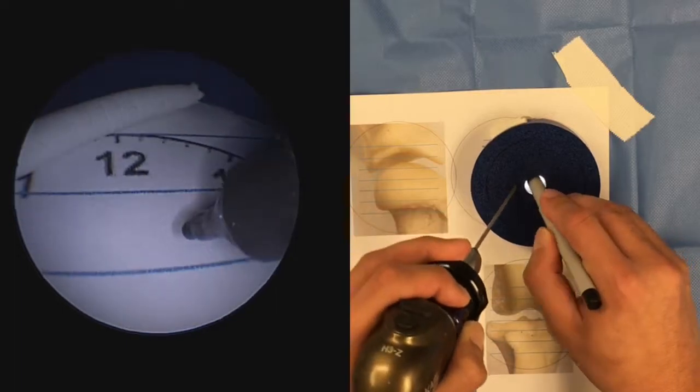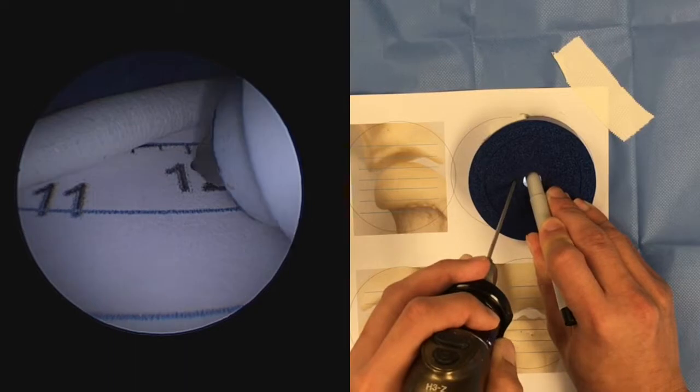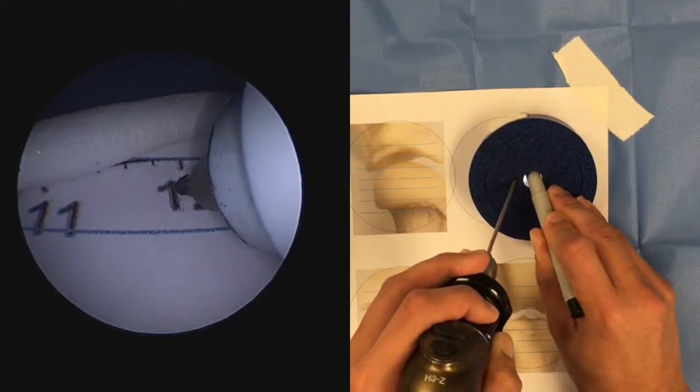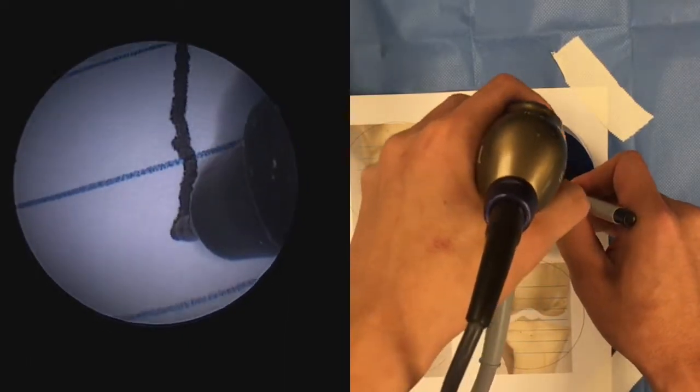In this case I've got the pen, the sharpie, in the right hand, so we're going to triangulate here and find the tip in the field of view. Starting at twelve o'clock, we're going to move down to the seven o'clock position.